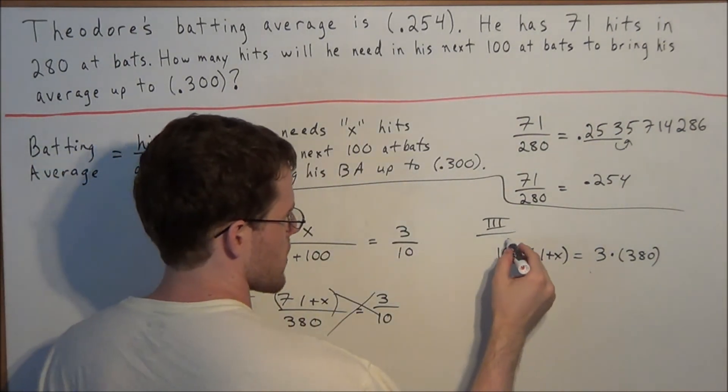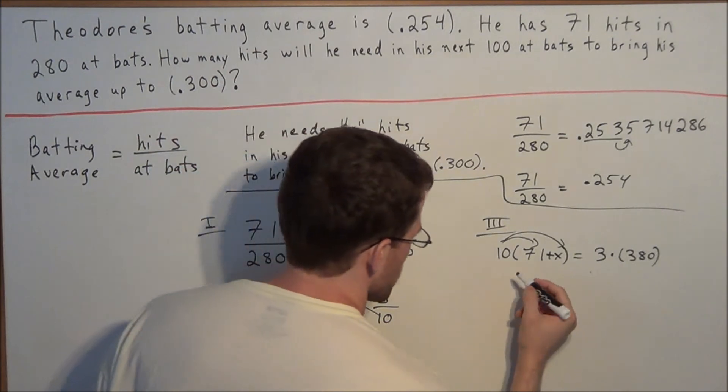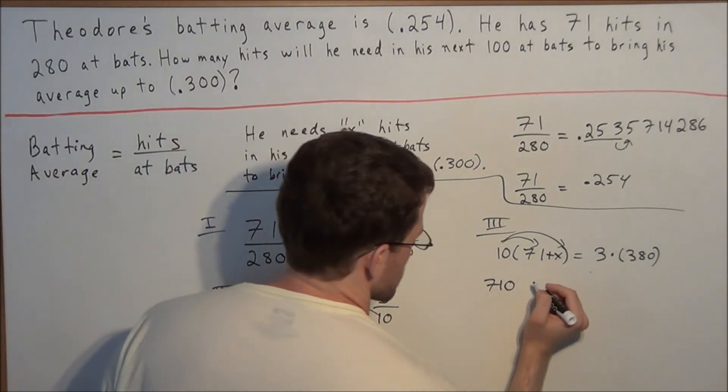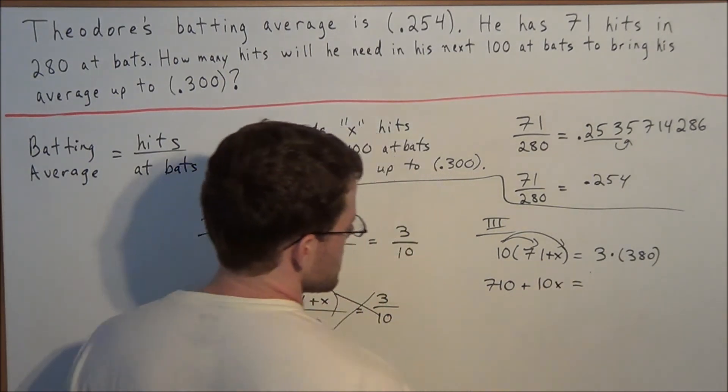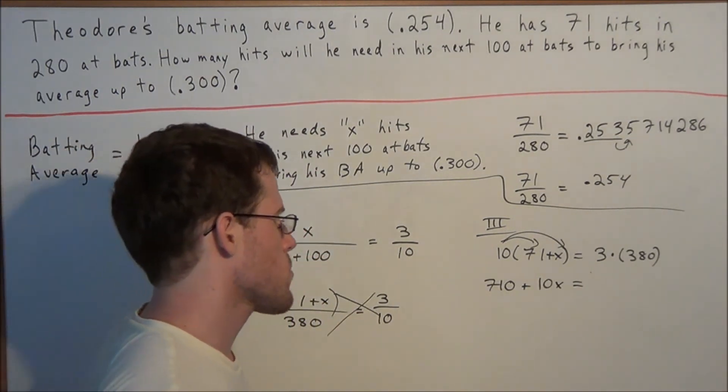So for the next line, on the left hand side, we could distribute. We have 10 times 71 is 710, and we have 10 times x is 10x, so we have 710 plus 10x. And now we can set this equal to, well, 3 times 380, you should get 1140.